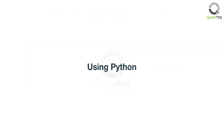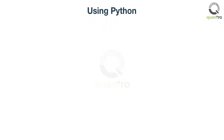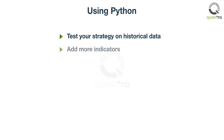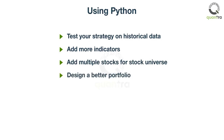You can use the MACD indicator directly to buy or sell the stock, but you can get so much more analysis by using Python and testing your strategy on historical data. With Python you can easily add more indicators as well as select stocks from the entire stock universe. You can even build a portfolio and see how well the strategy works on it. The time you save can then be used to research and try various other strategies to see which one performs better.